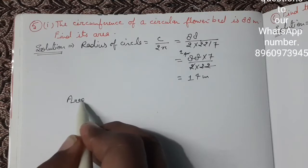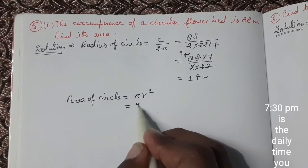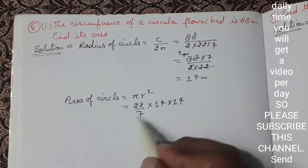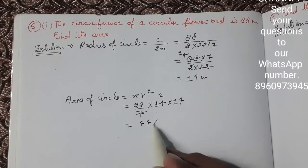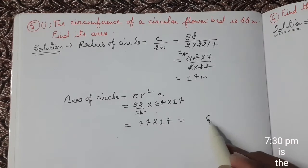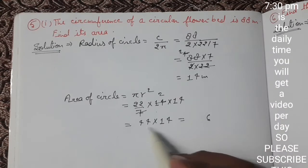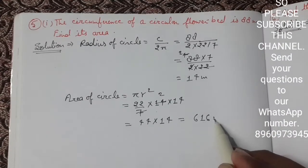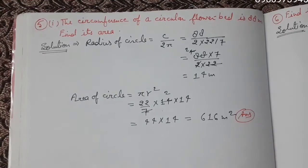After finding the radius, we will find the area of the circle. Area equals πr², where π equals 22 upon 7 and radius is 14, so 14 multiply 14. Then we multiply 44 by 14 to get 616 square meters as our answer.